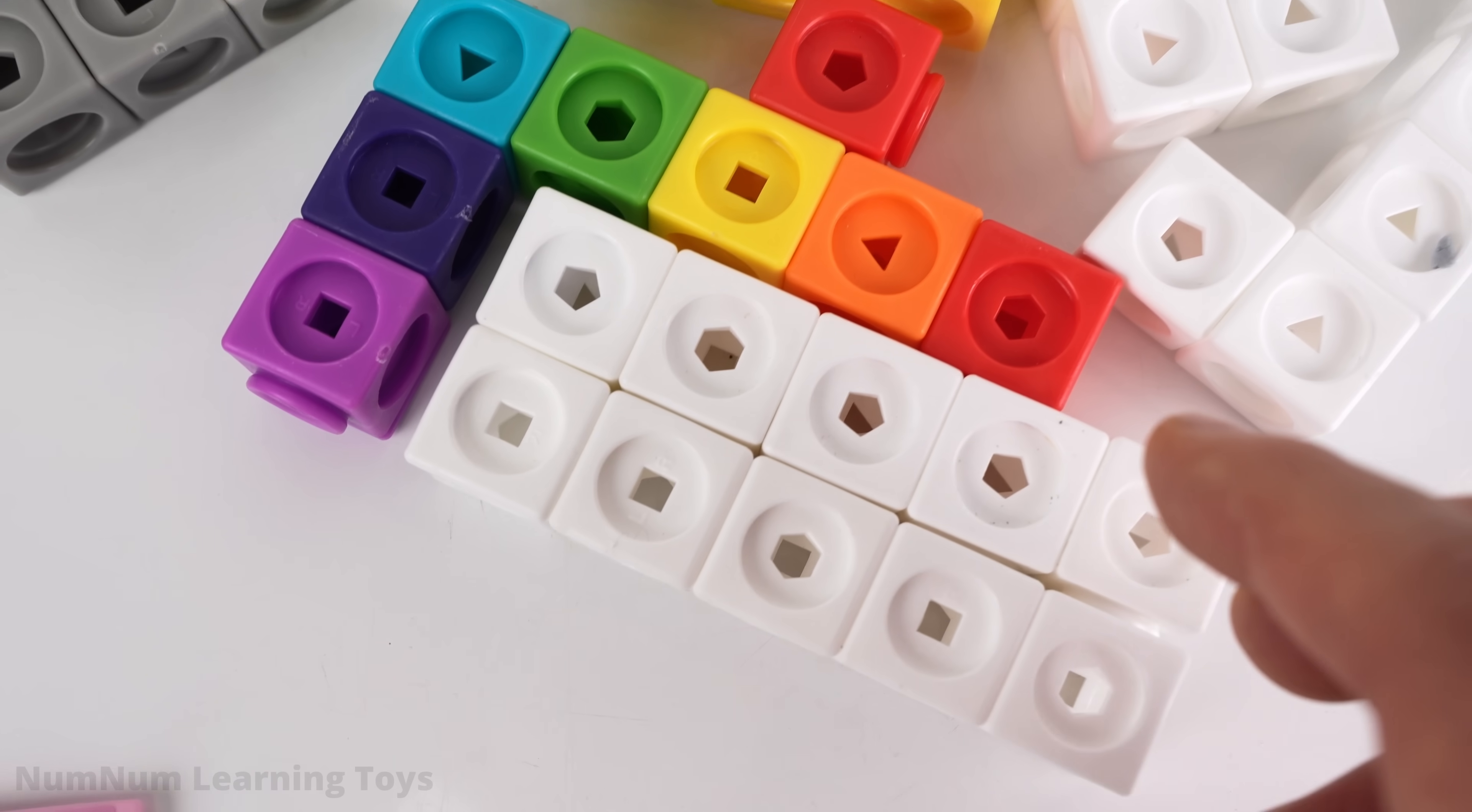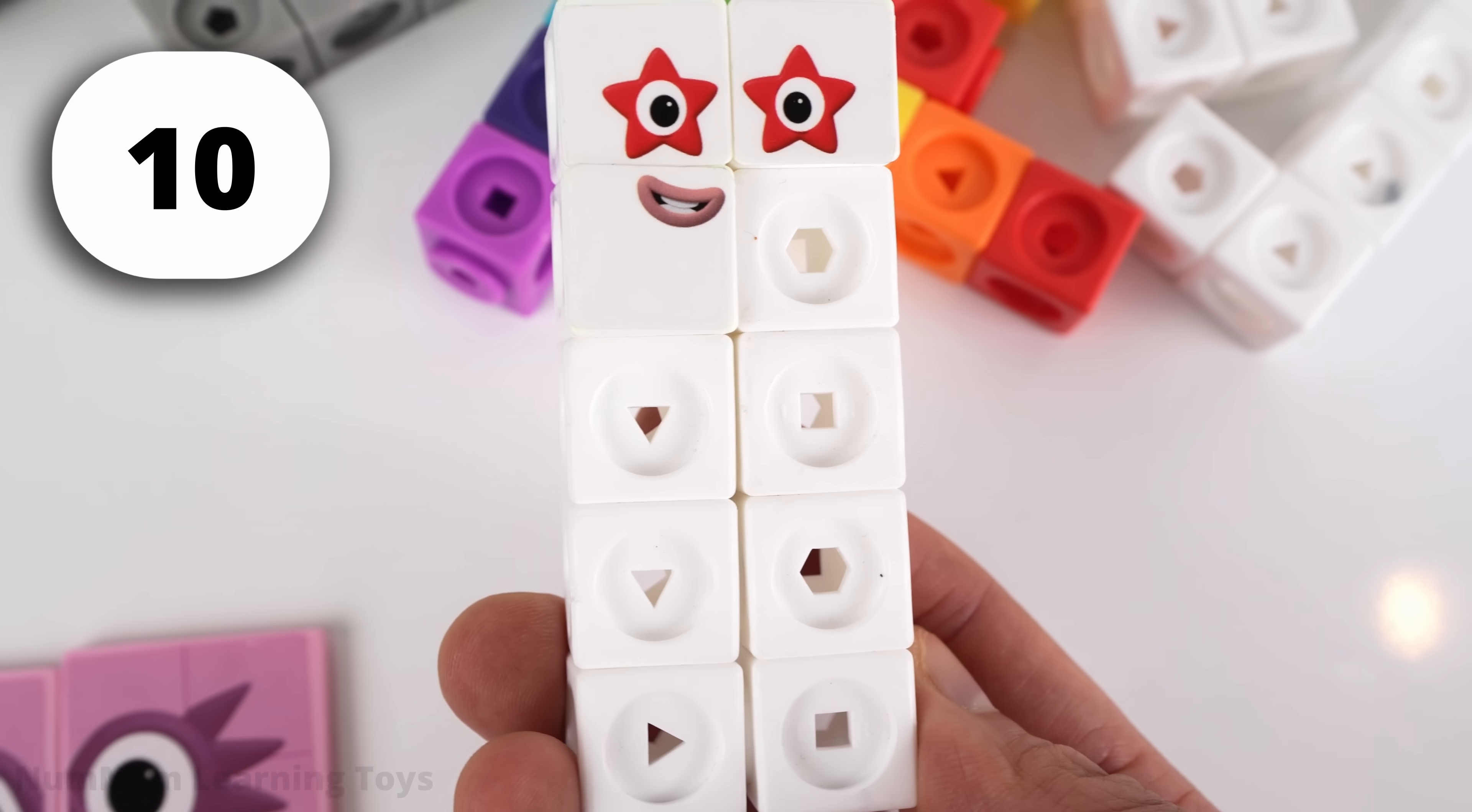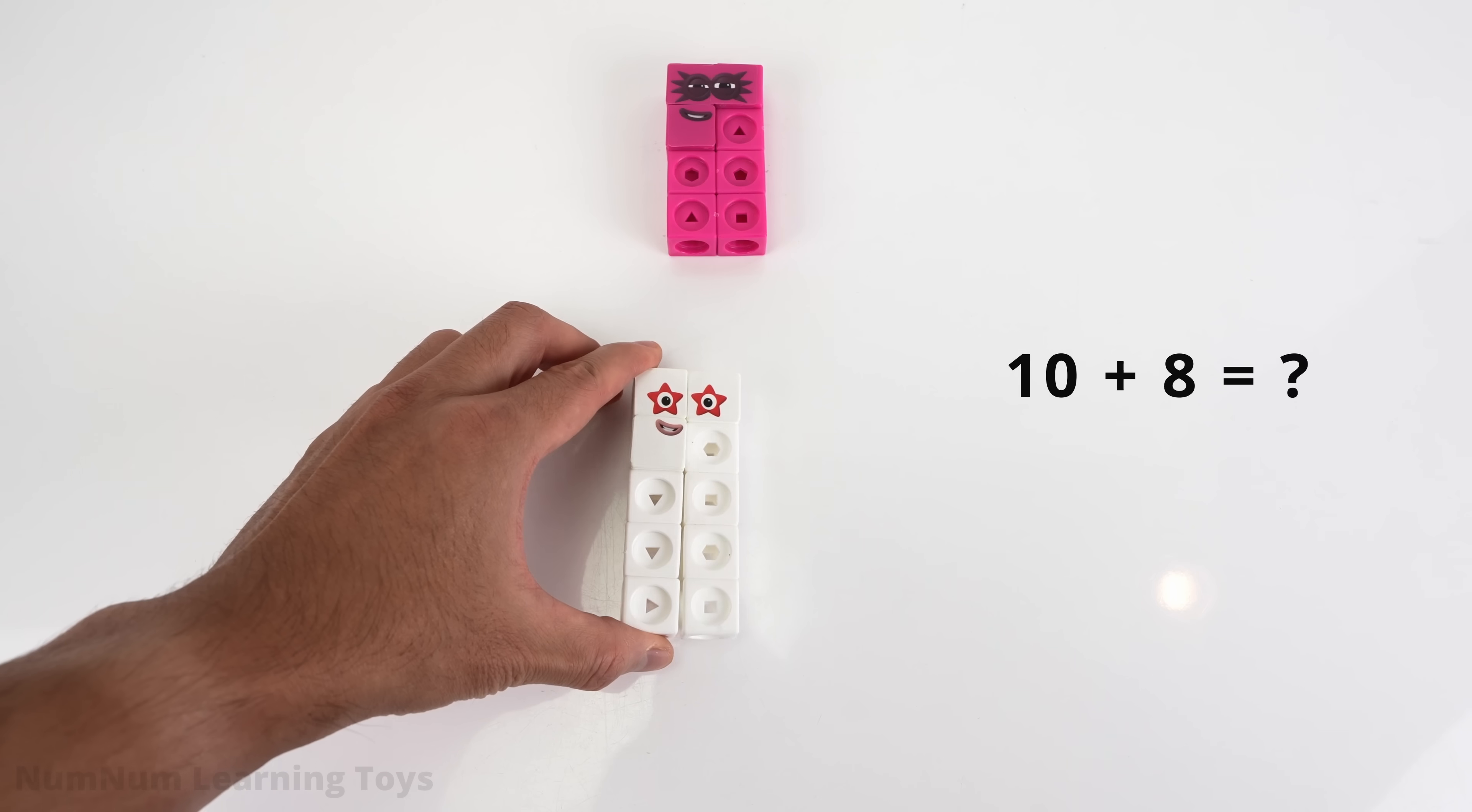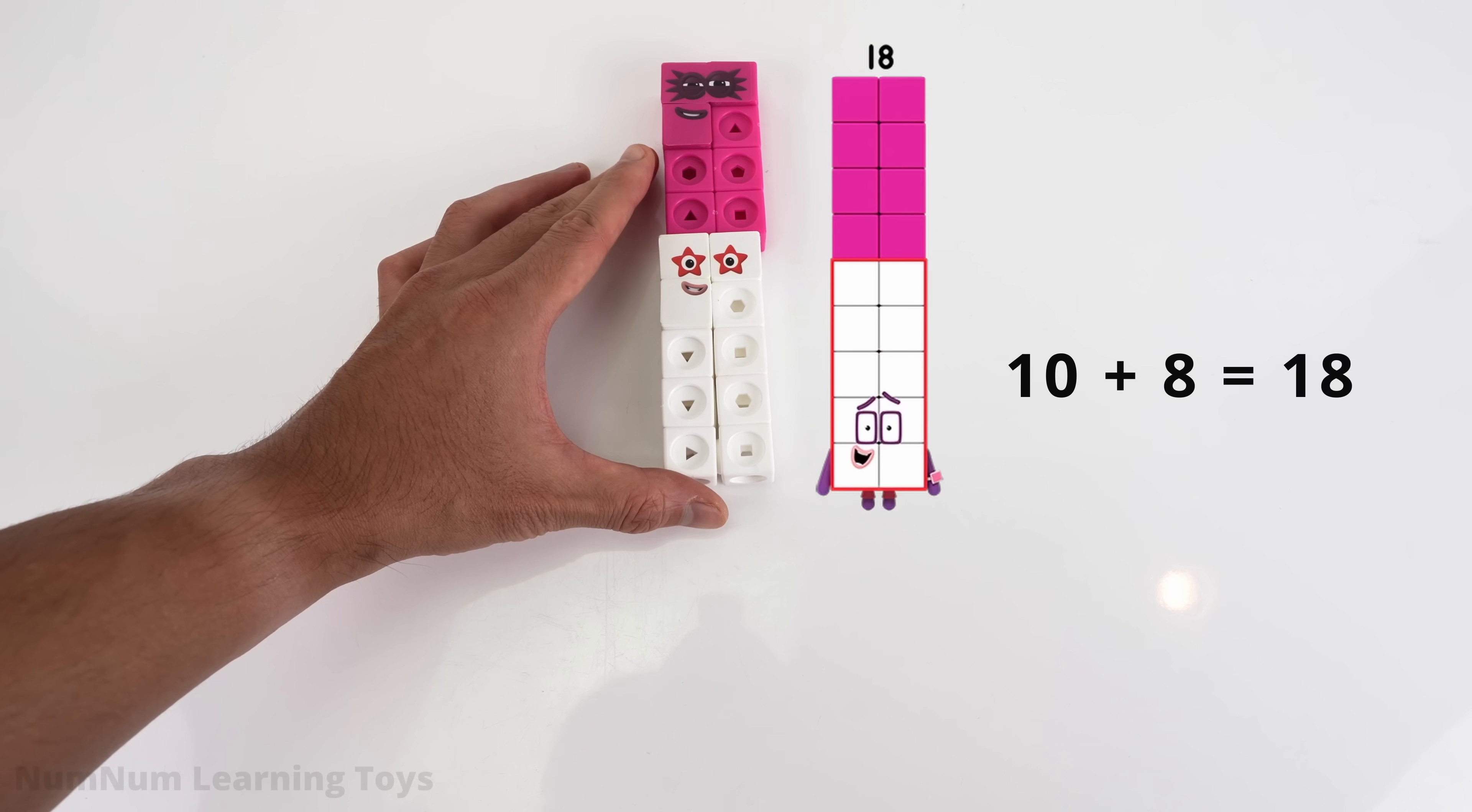Here's the next block. It's a 2x5 rectangle. That means it's number 10. What number do we get when we add 10 to 8? We make 18, a super rectangle.